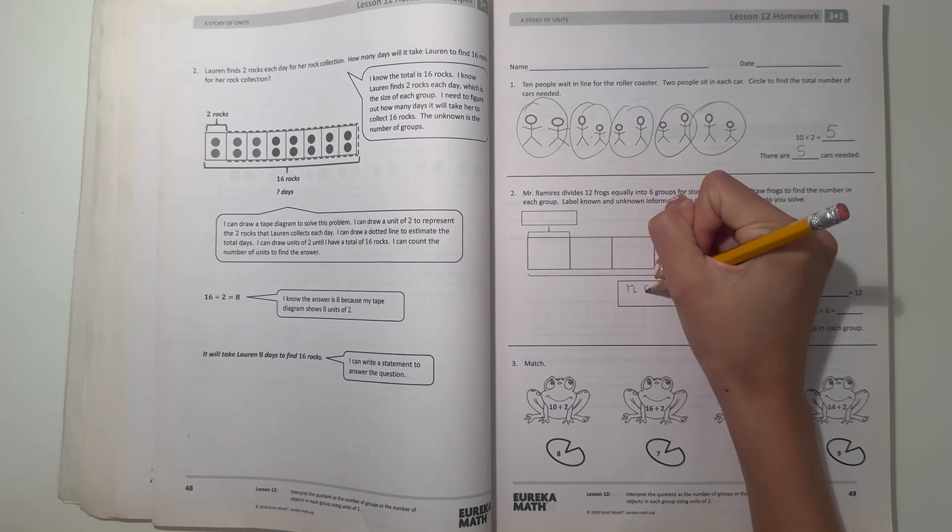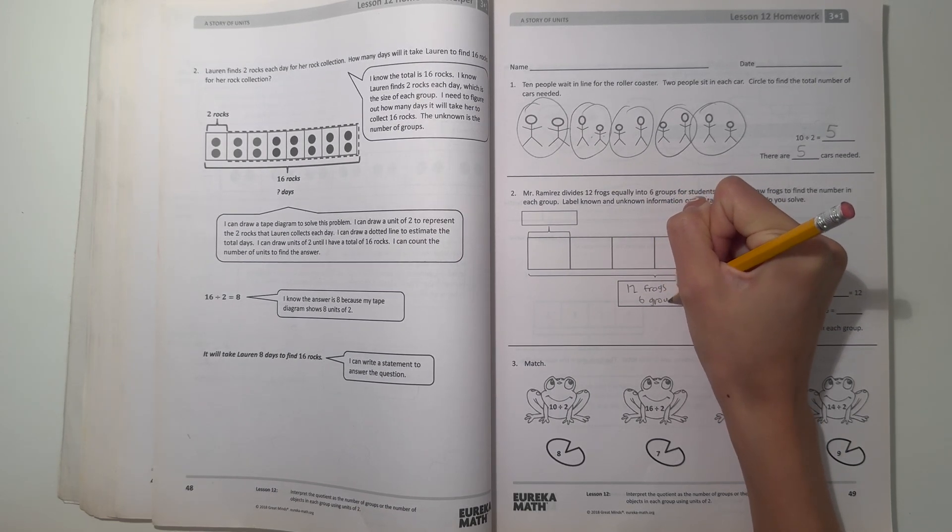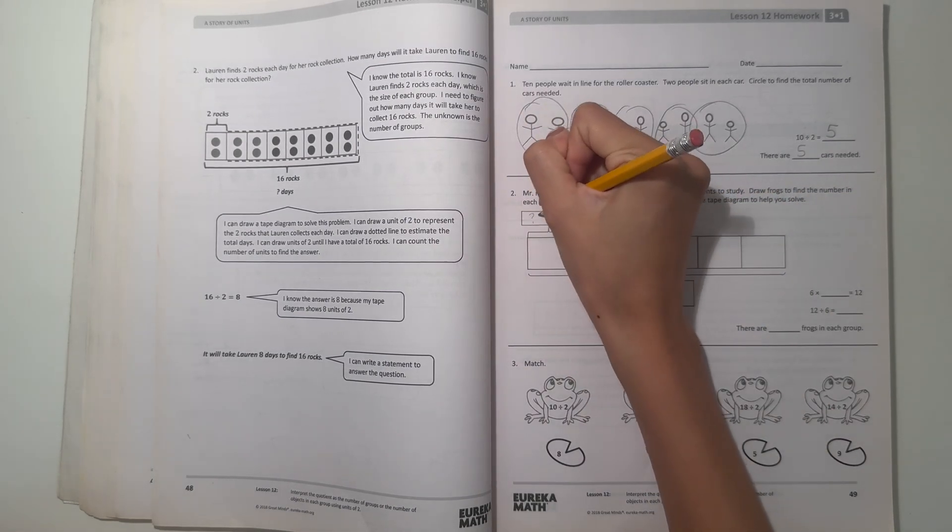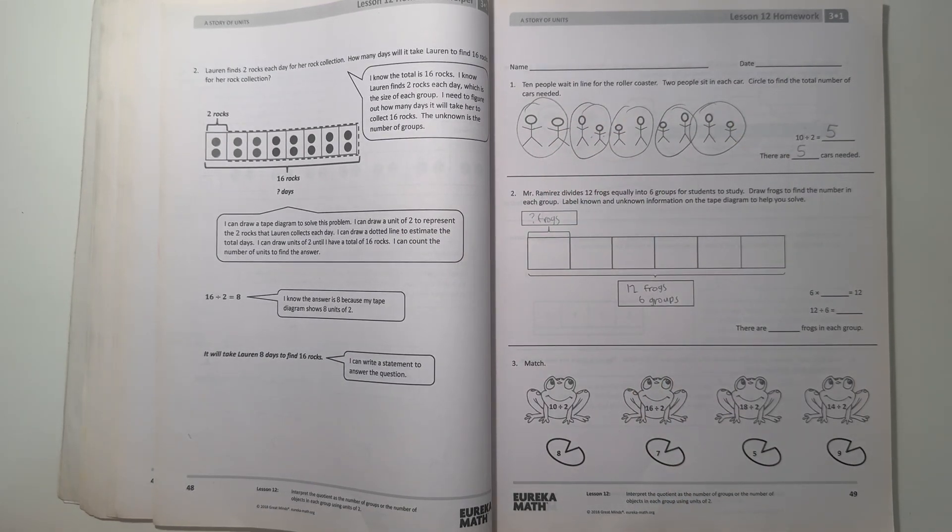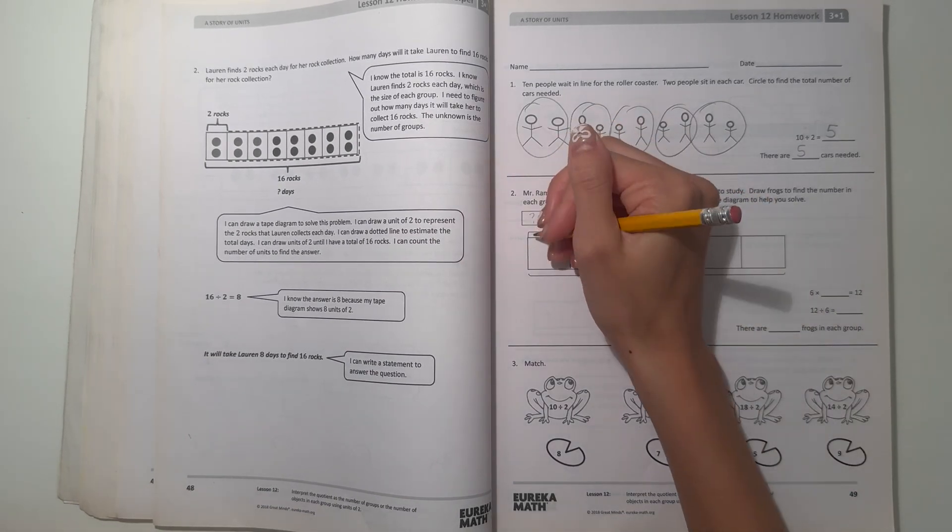So what do we know? In total there's 12 frogs and there's 6 groups. But right now we're trying to find out how many frogs in each group. So we know there's 12, so we can just keep drawing frogs until we reach 12. And let's draw circles to represent frogs.